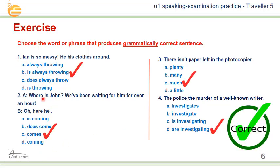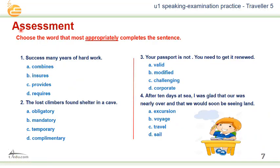The right options: For number one, B is the right option — is always throwing. For number two, C is the right option — comes. For number three, C is also the right option — much. For the last sentence, number four, are investigating is the right option.